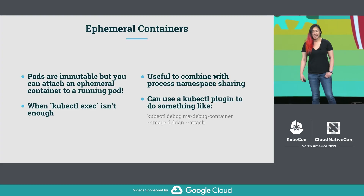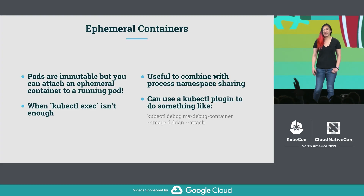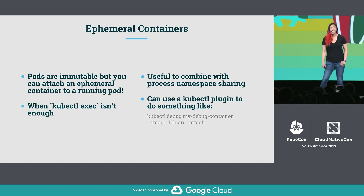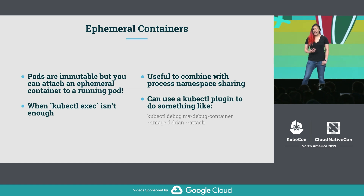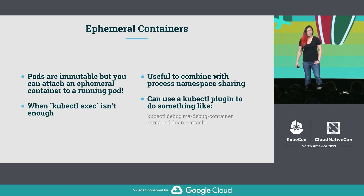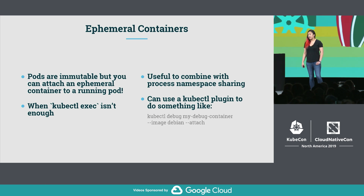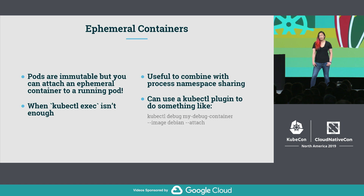I'm particularly excited about ephemeral containers. How many of you have had to answer the question of, now that my application is in Kubernetes, how do I debug it? Very common question, especially if you have minimal container images that are literally built from scratch. Ephemeral containers allow you to attach a container to a running pod, so you can do things like run debugging tools in a separate debug image and use the pod's network namespace — so you could do things like TCP dump in your pod that is already running.